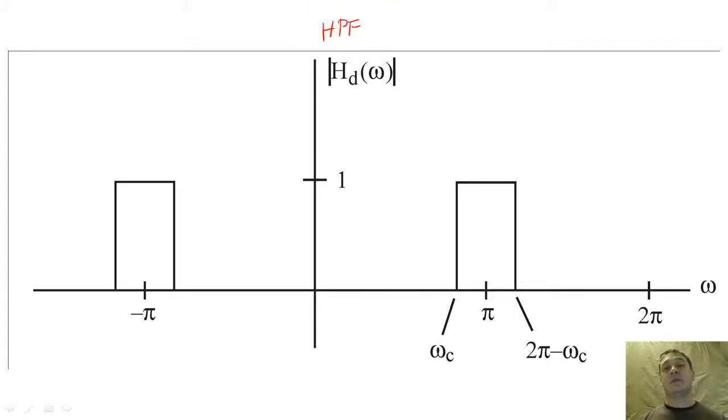The second type of filter is the high-pass filter. This filter does the opposite and removes all frequency content that is less than the critical frequency, and passes all frequency content higher than the critical frequency.